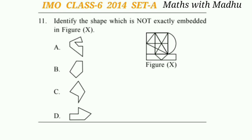Question 11: Identify the shape which is not exactly embedded in figure X. Looking at the figure, the correct answer is option A — the figure in option A is not exactly embedded in figure X.